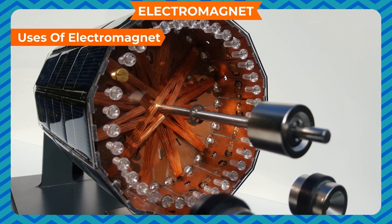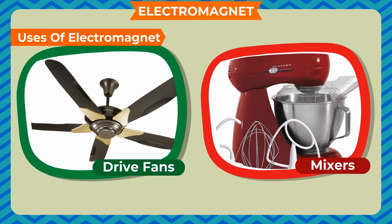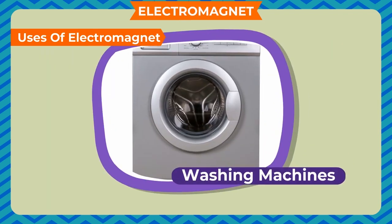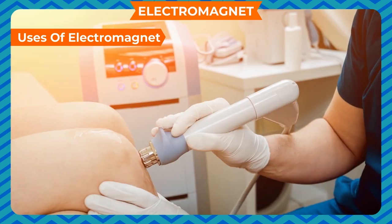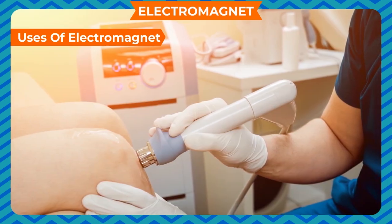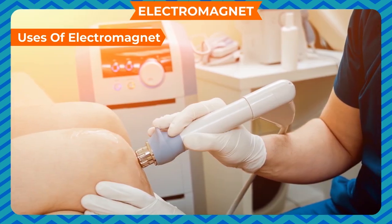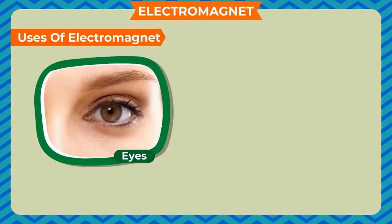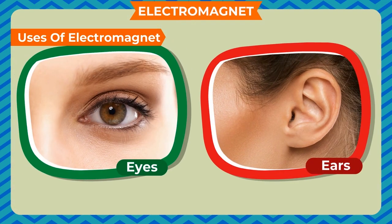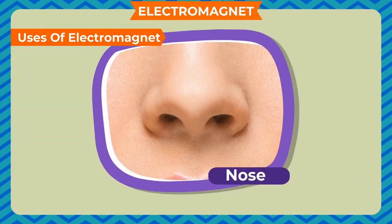Electromagnets are used in motors that drive fans, mixers, and washing machines. They are also used in generators. Doctors use very small electromagnetic devices to take out very small magnetic materials from eyes, ears, and nose.